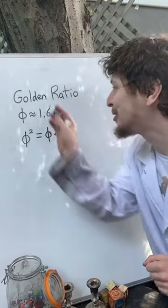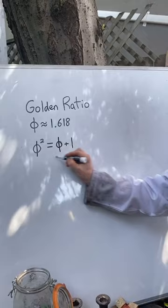Let me show you how to turn the golden ratio into its infinite fraction form. So the golden ratio, one definition is that it's the number that when you square it is equal to itself plus one.